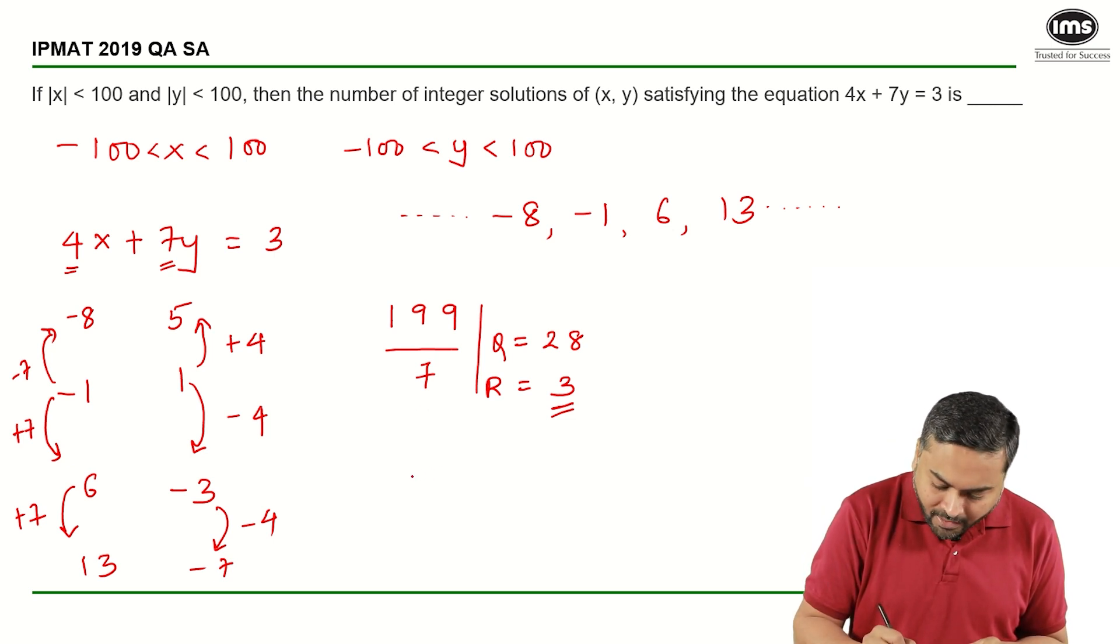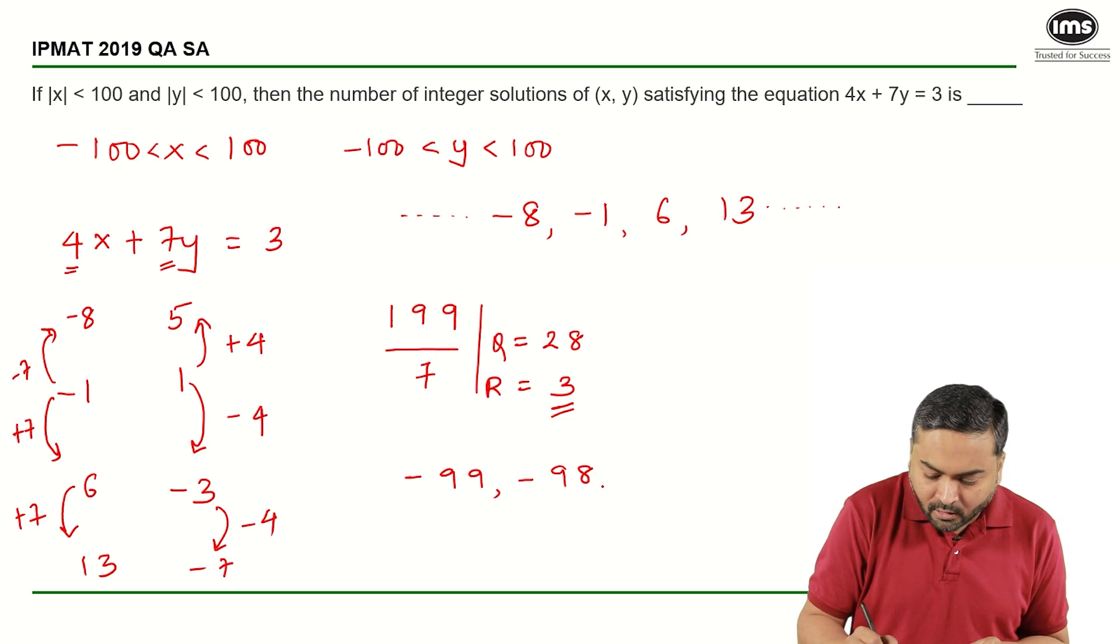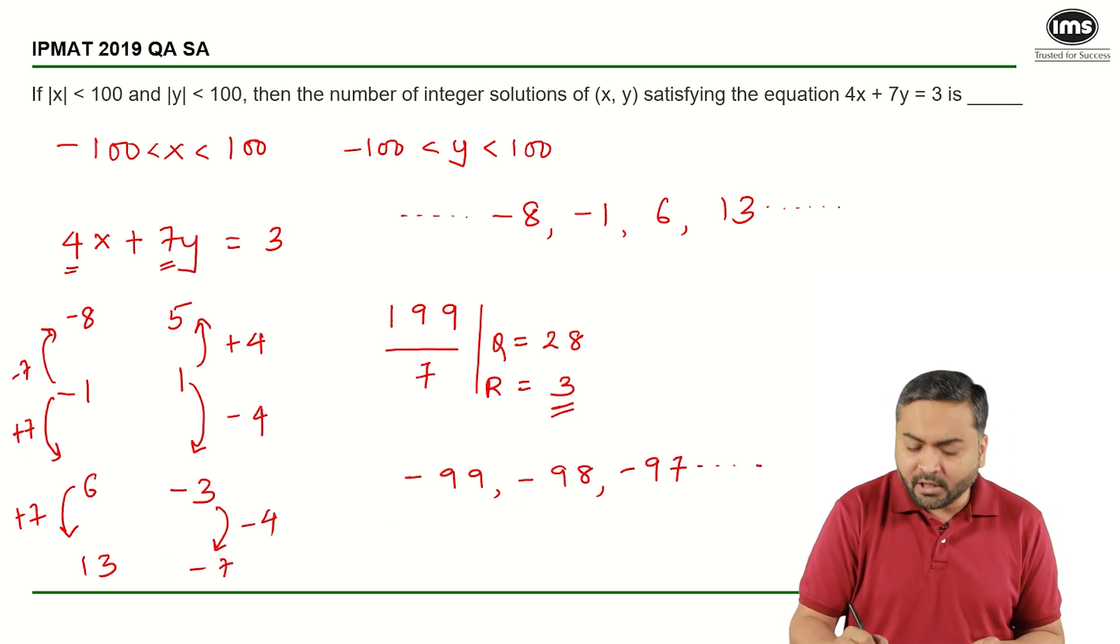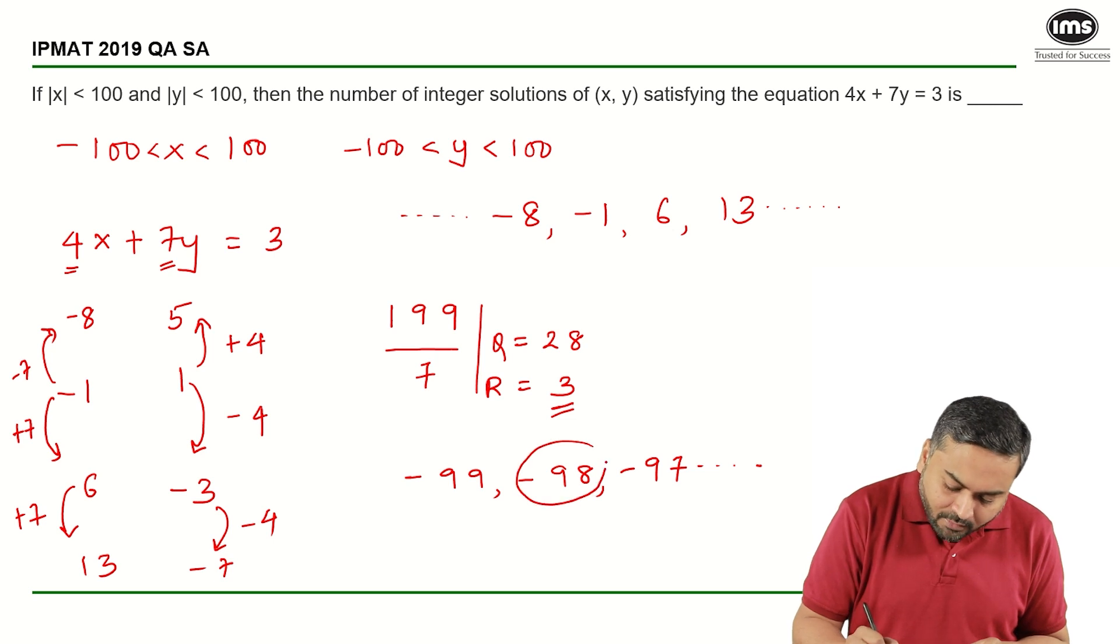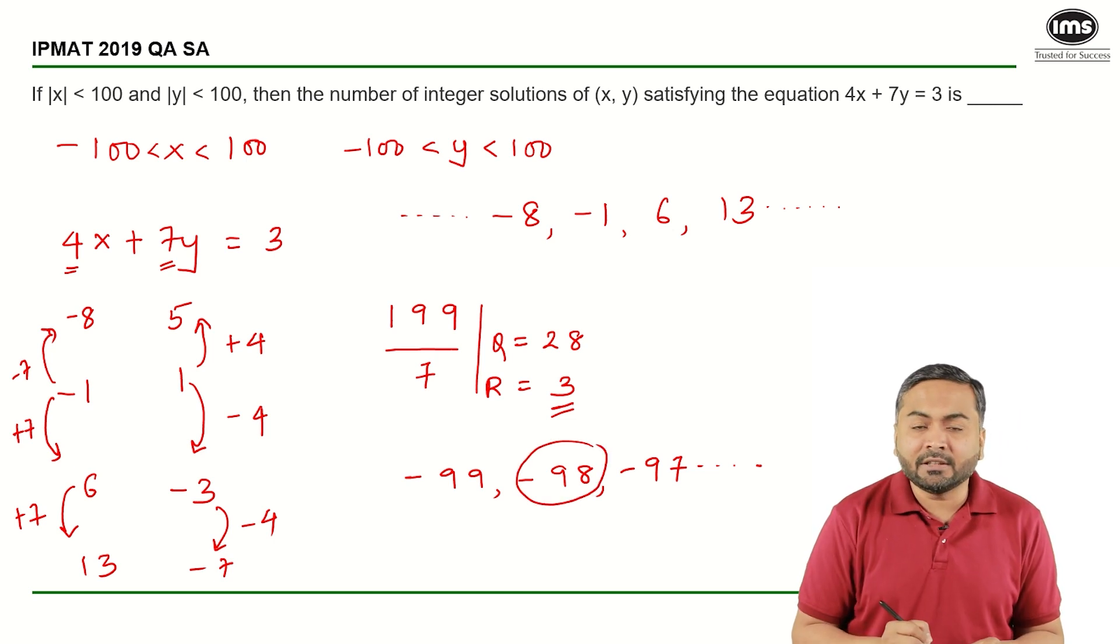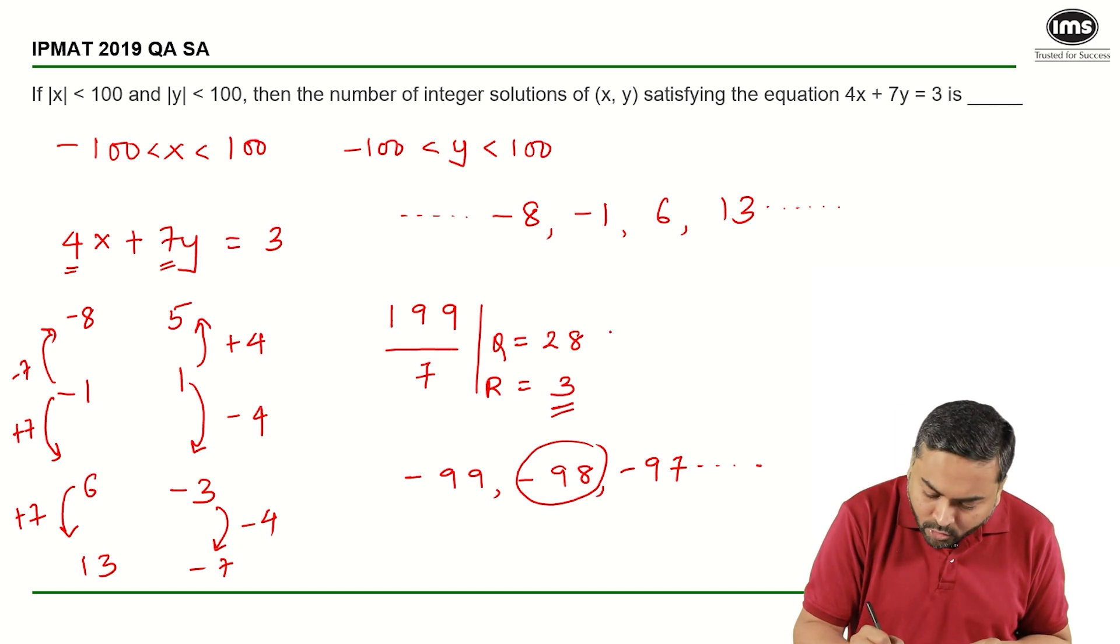So, the series starts from minus 99, then we have minus 98, then we have minus 97 and so on. These are the first three numbers in the series, I can see that minus 98 is divisible by 7, correct? And hence, your answer will be 28 plus 1, that is 29.